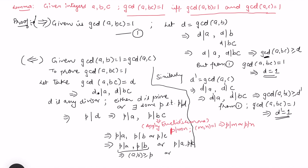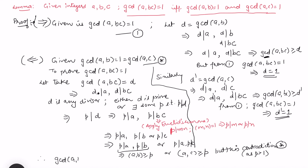This implies either gcd(a, b) ≥ p or gcd(a, c) ≥ p. But this contradicts the given condition, since p is a prime and is greater than 1. So our assumption fails, and therefore gcd(a, bc) = 1. This proves the lemma. Now I'm going to use this lemma to prove that the Euler phi function is a multiplicative function.